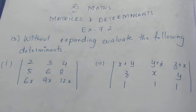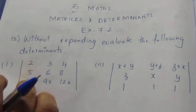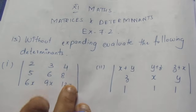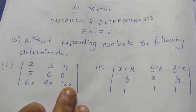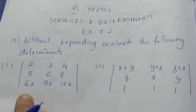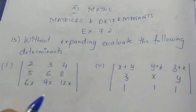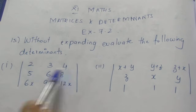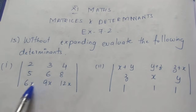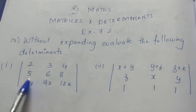Without expanding, evaluate the following determinant. The determinant given is: 2, 3, 4 / 5, 6, 8 / 6, 6, 9 multiplied by 12x.